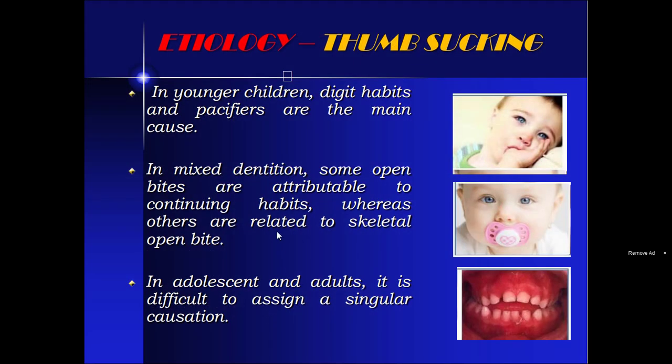Second etiological factor is thumb sucking. In younger children, digit habits and pacifiers are the main cause. In mixed dentition, some open bites are attributable to continuing habits, whereas others are related to skeletal open bite. In adolescents and adults, it is difficult to assign a single cause.